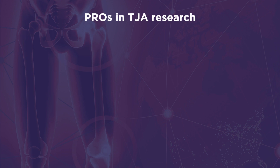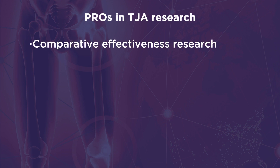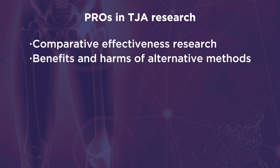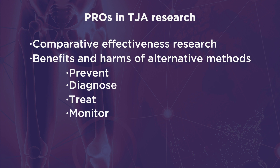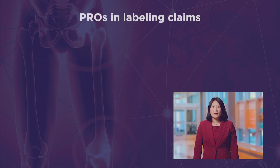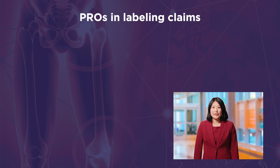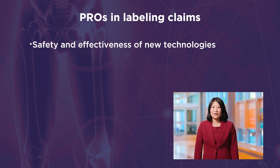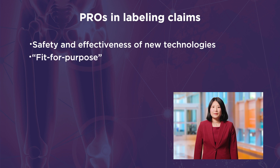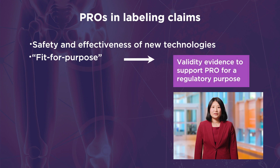In the research setting, PROs are used in comparative effectiveness research to explain the differential benefits and harms of alternate methods to prevent, diagnose, treat, and monitor TJA to improve care delivery. When it comes to labeling claims, PRO instruments help to measure the safety and effectiveness of new technologies or implants to support labeling claims. FDA uses the fit-for-purpose approach to determine the validity evidence needed to support the PRO instrument's specified use for a regulatory purpose.